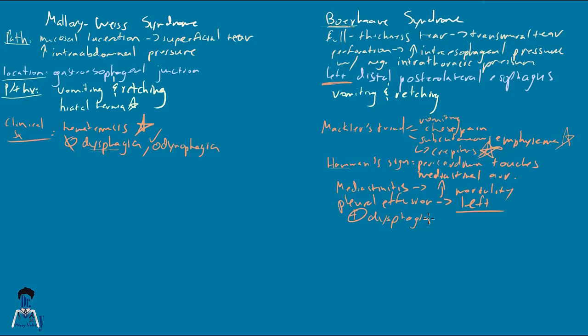Depending on where in the esophagus the Boerhaave perforation is, symptoms differ. A cervical perforation gives you neck pain, dysphagia, and cervical subcutaneous emphysema instead of chest wall crepitus. An intra-abdominal perforation may give you radiation to the shoulder or back pain. With both Mallory-Weiss and Boerhaave you'll see nonspecific signs like tachycardia, diaphoresis, and hypotension, but with Boerhaave you may also have fever due to sepsis — fever is definitely not Mallory-Weiss. Hematemesis, while significant for Mallory-Weiss, is not a significant feature of Boerhaave.